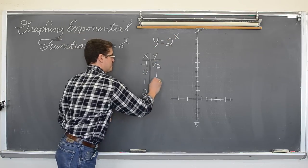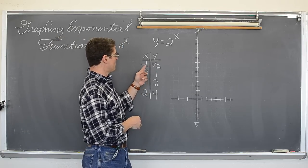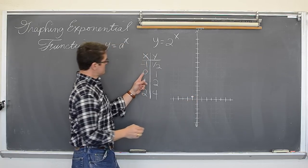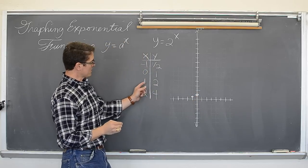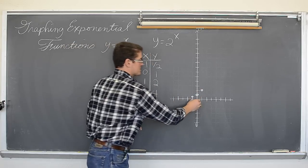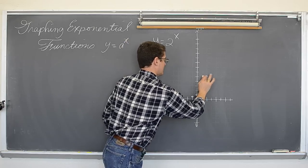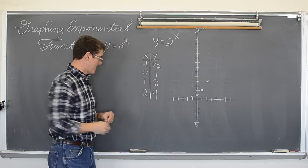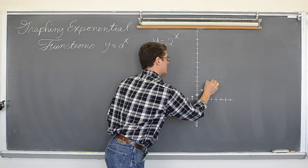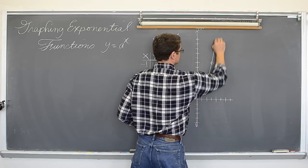Two to the first power is 2, and two to the second power is 4. So we have the points: negative one gives one half, zero gives 1, one gives 2, and two gives 4. Plotting those — negative one, one half; zero, one; one, two; two, four — and let's try one more point: three. Two to the third power is equal to 8. And we get this exponential curve.